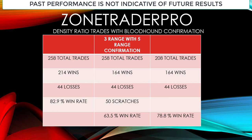Let's look at some numbers — and this is a good time to remind everybody that past performance is not indicative of future results. I'm calling this strategy the 'Density Ratio with Bloodhound Confirmation, Three Range with Five Range Confirmation.' Over 26 days there were 258 total trades: 214 wins and 44 losses, giving a historical 82.9% win rate.